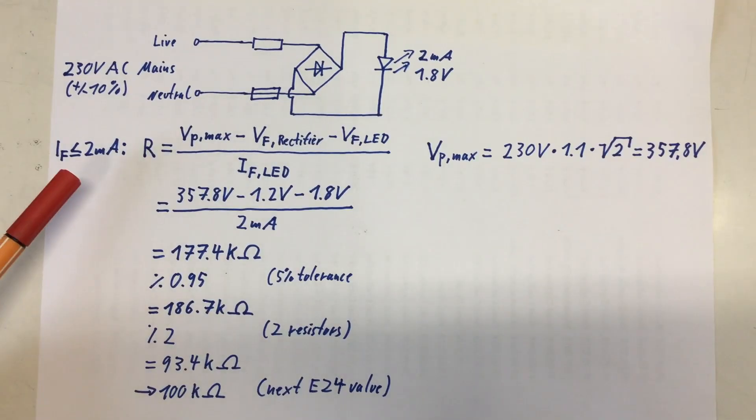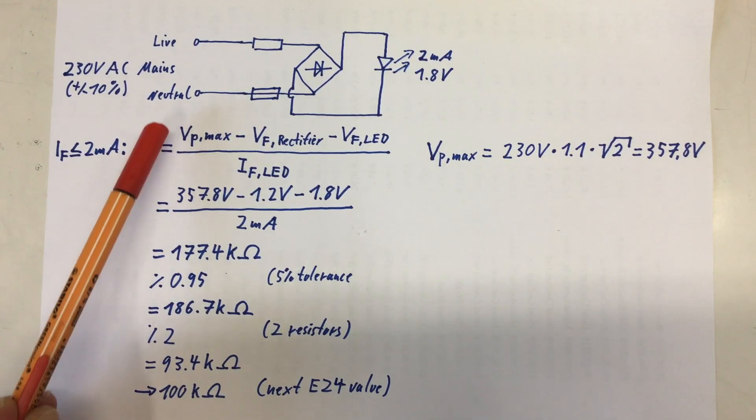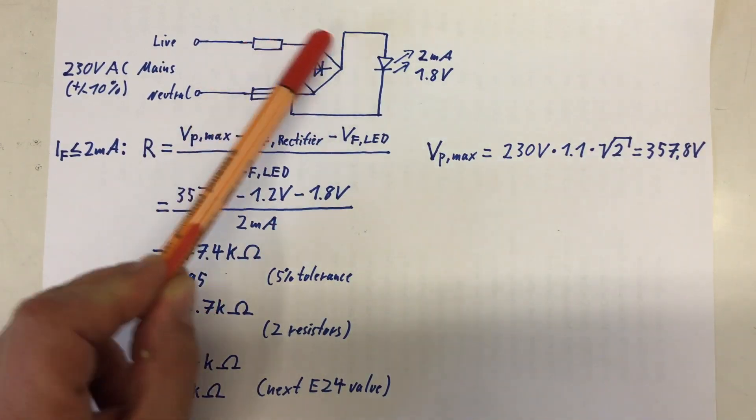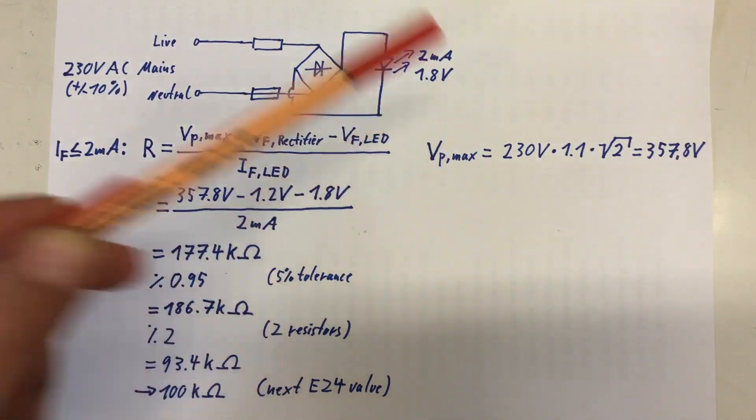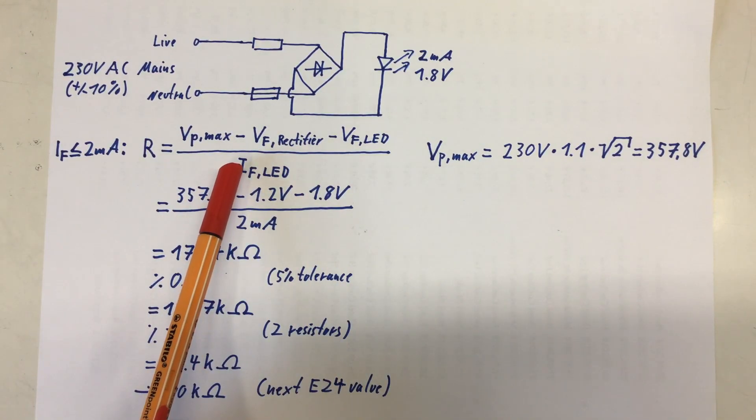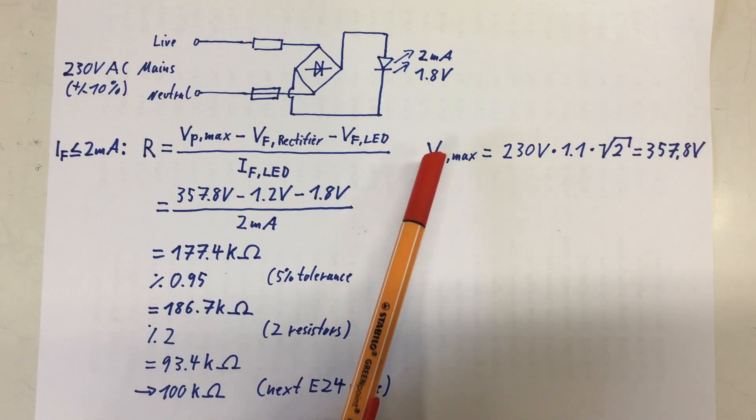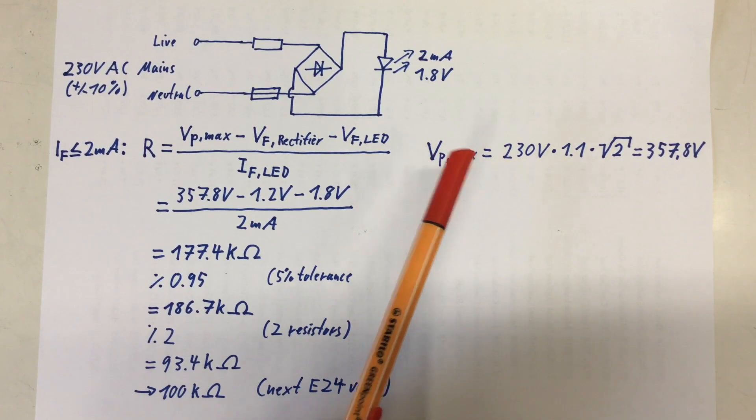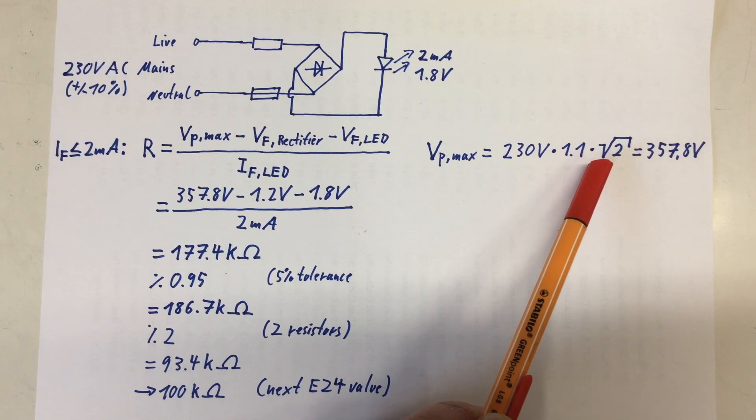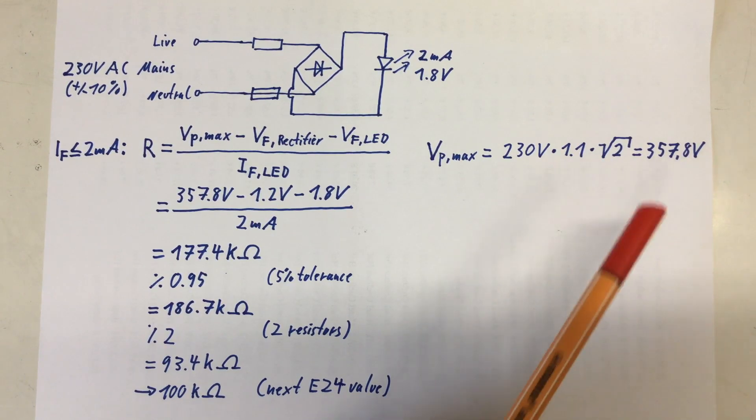Let's do the math. So I'm starting a little bit conservative and say, my forward current through my LED should always be at or smaller 2 milliamps. So my resistor is my AC peak voltage maximum possible minus the forward voltage through my bridge rectifier minus forward voltage of the LED at 2 milliamps, which is 1.8 volts, divided by the forward current of the LED. And the peak maximum voltage here, where I live, is 230 volts plus 10% times square root 2, and that's 357.8 volts.